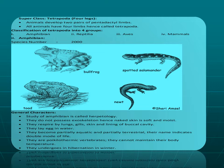The classification of tetrapods is into four groups: Amphibia, Reptilia, Aves (birds), and Mammalia. Now let us start from Amphibians.